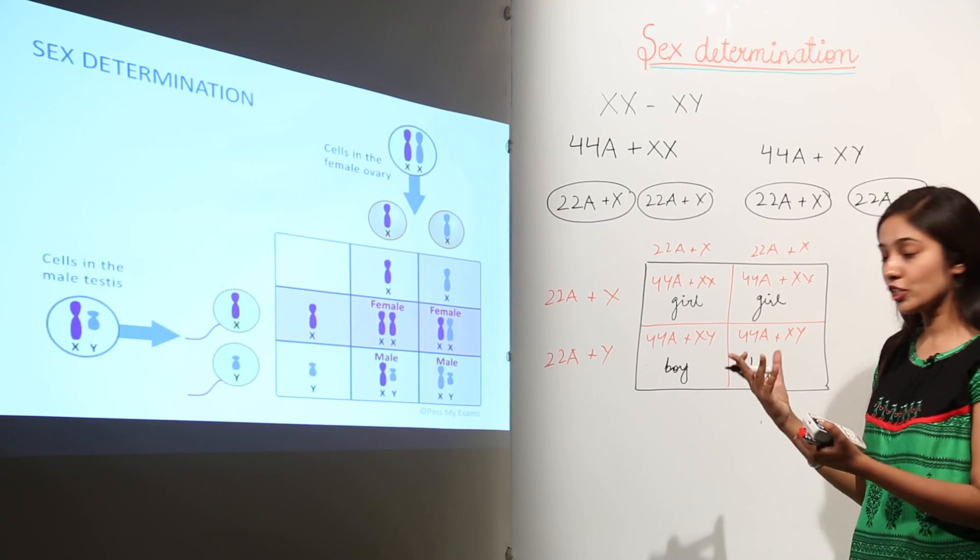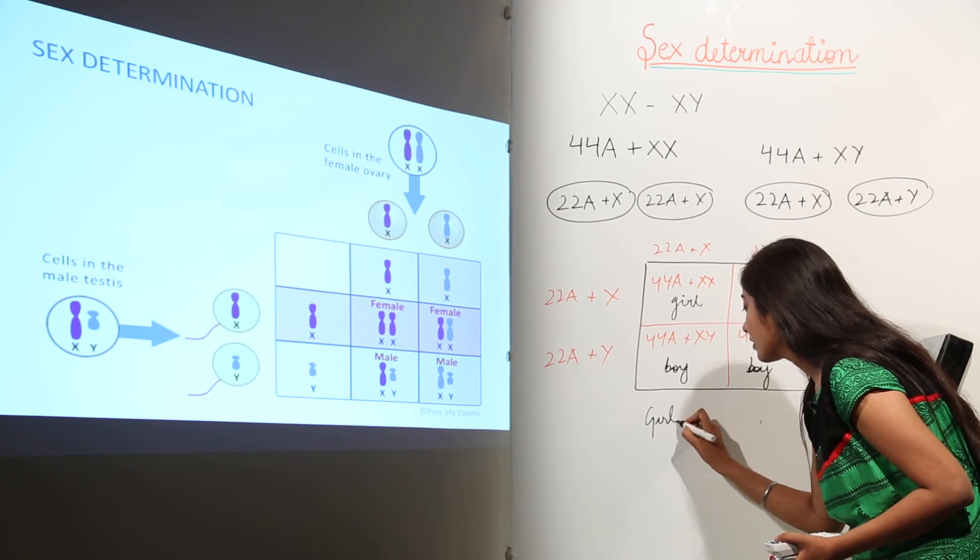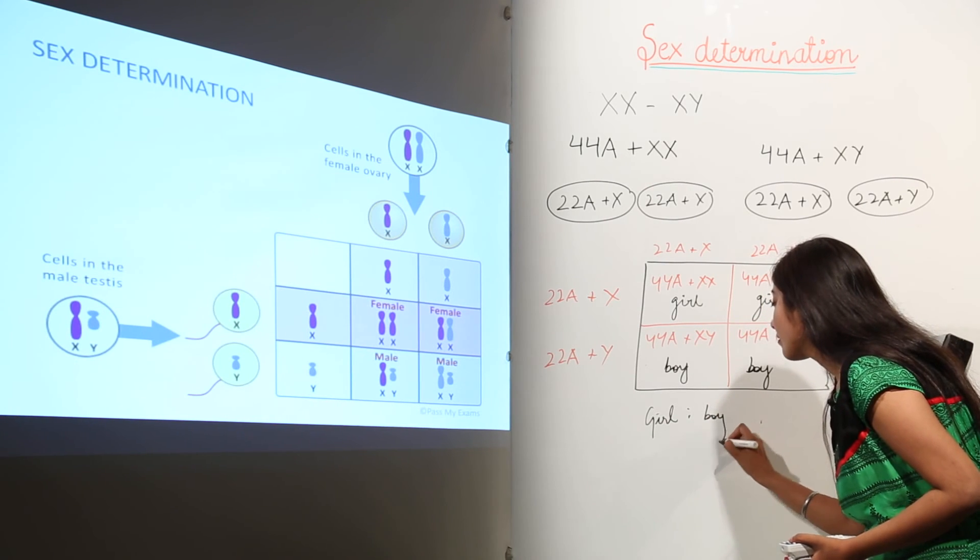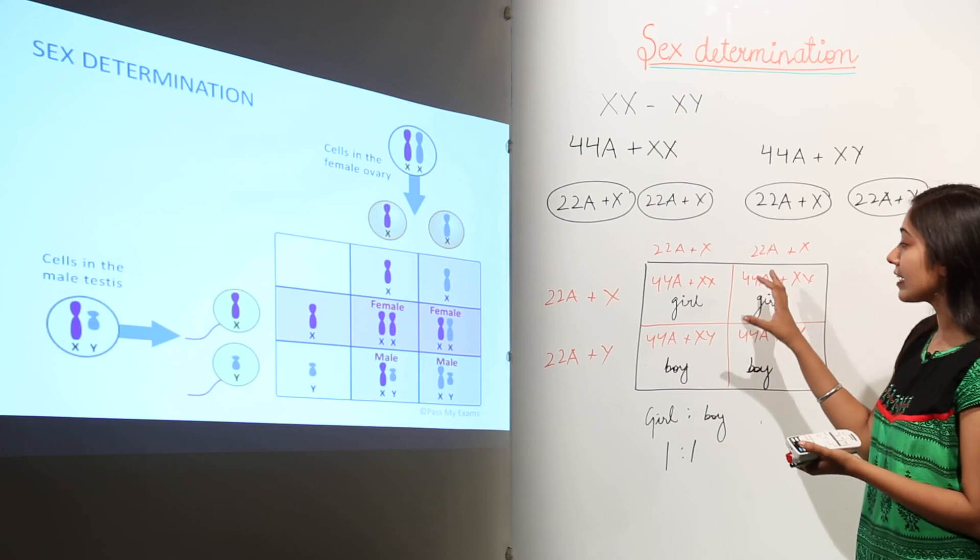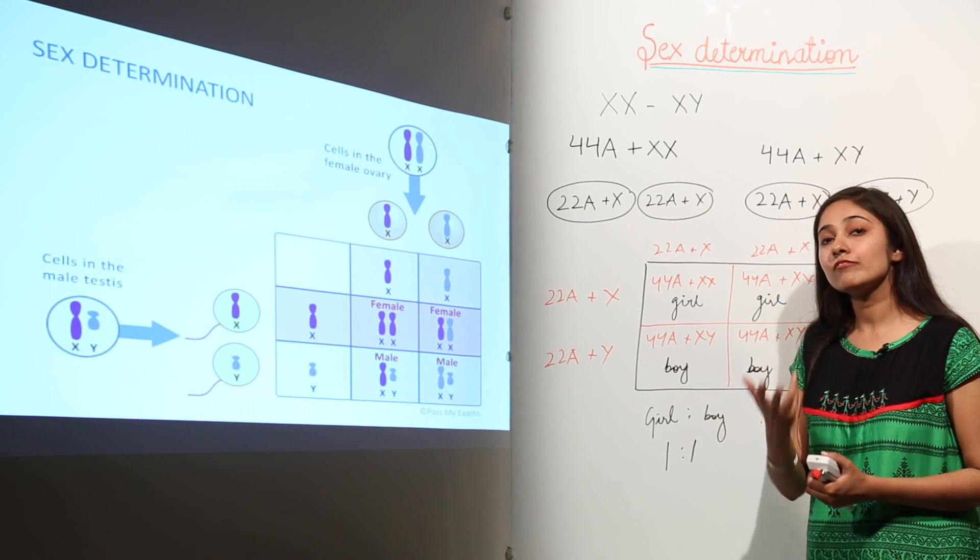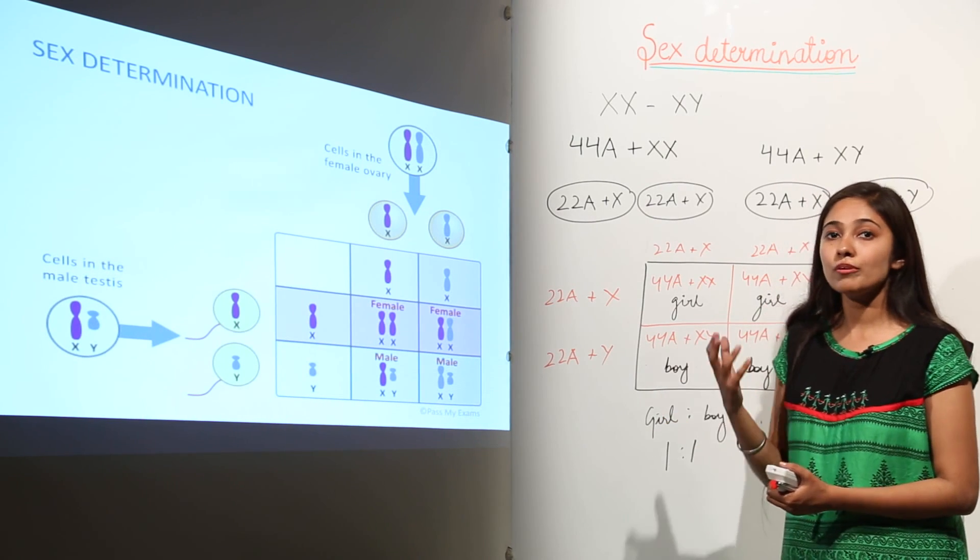So you can see if we have the ratio of girls versus boys, we will have a ratio that is 1:1. There are 50% chances for the birth of a baby boy and 50% chances for the birth of a baby girl.